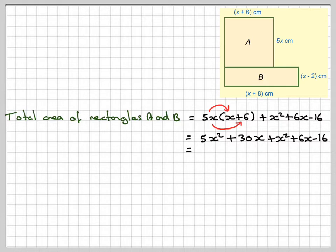5x² + x² is 6x², 30x + 6x makes 36x, and then we've still got the -16, and this is what we're required to find in part B.